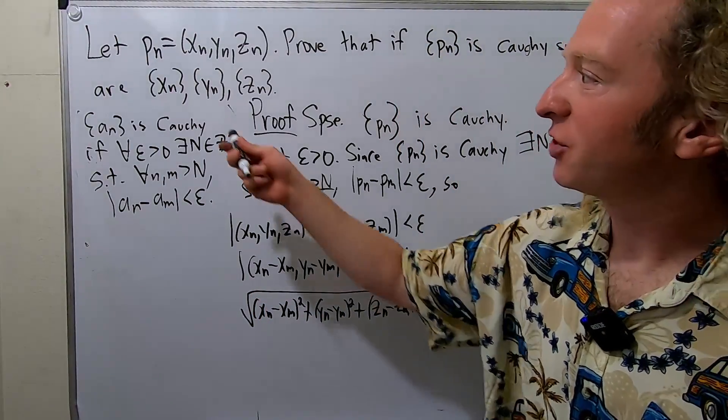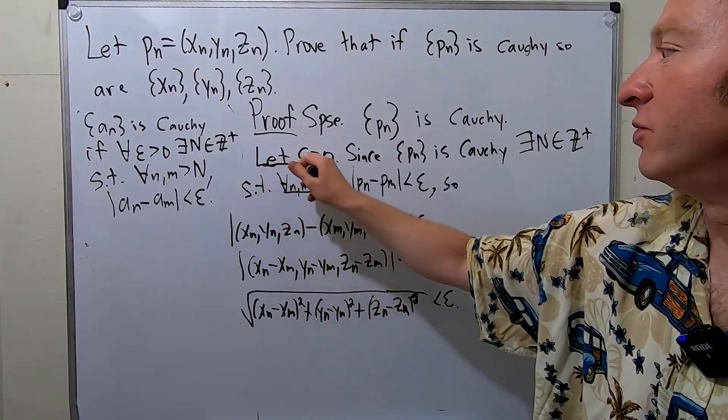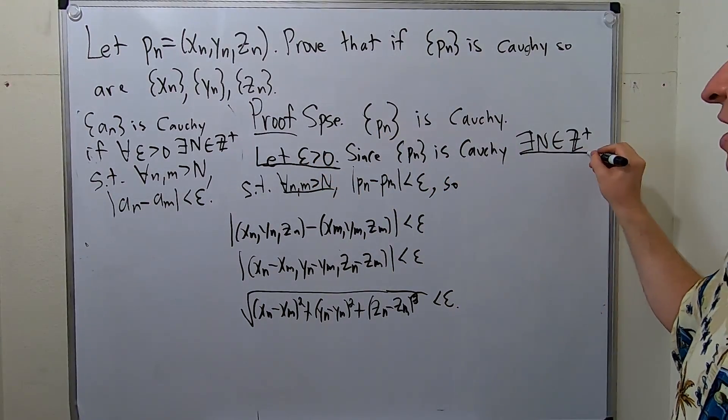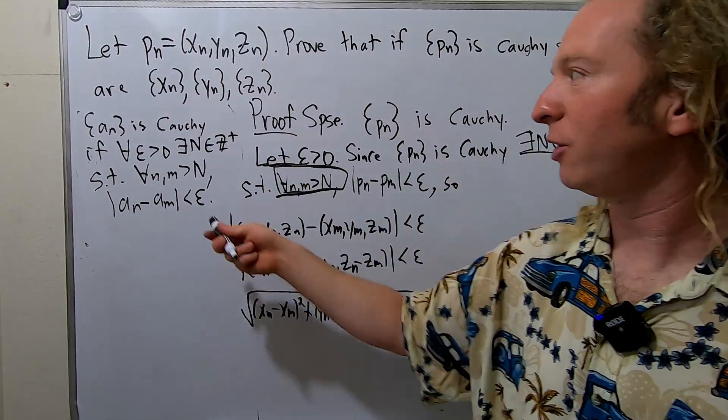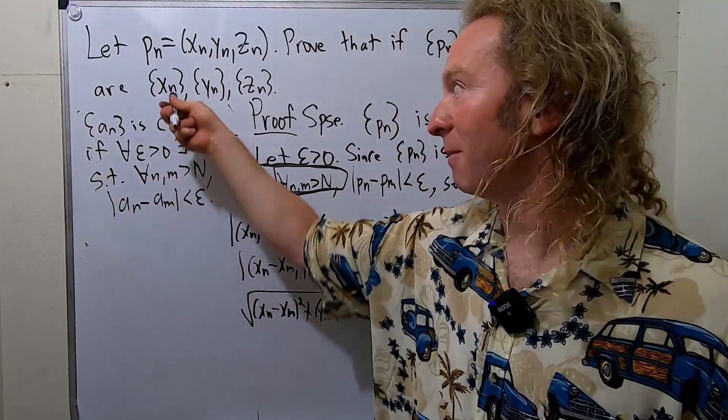So how is that possible? So we have to show this is Cauchy. So we took an epsilon greater than zero. We showed the existence of an N. And then for all little n and little m bigger than capital N, now we're going to look at the distance between Xn and Xm. Because we're doing this one.